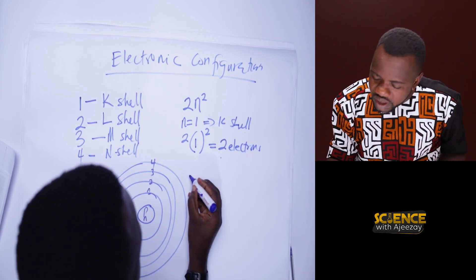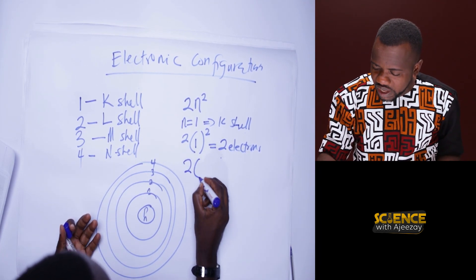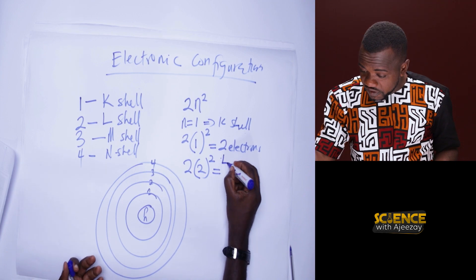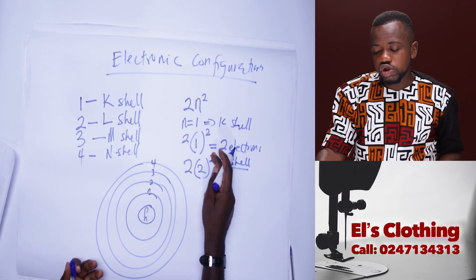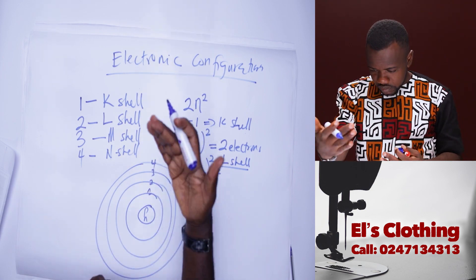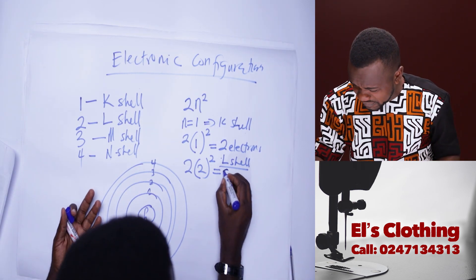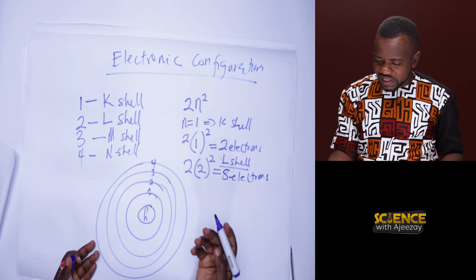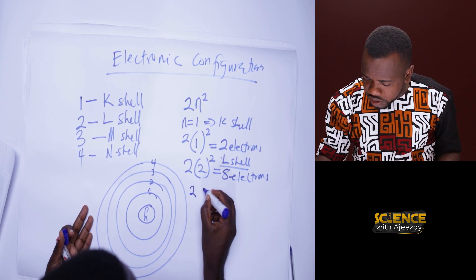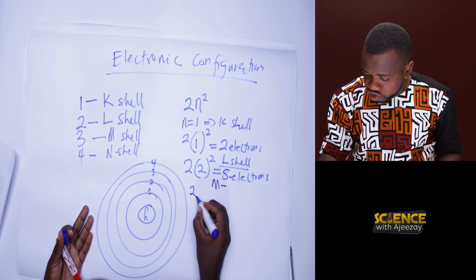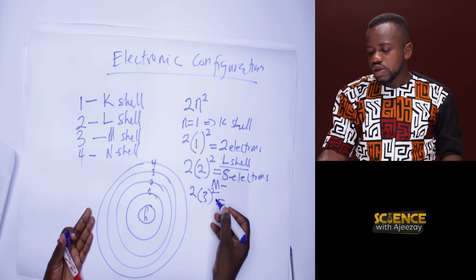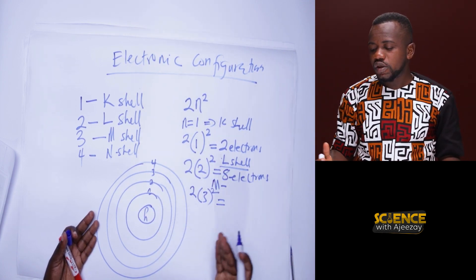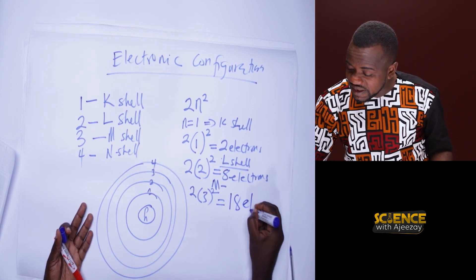For the second shell (L shell), n = 2: 2 × 2² = 2 × 4 = 8, so the second shell takes 8 electrons. For the third shell (M shell), n = 3: 2 × 3² = 2 × 9 = 18, so the third shell takes 18 electrons.